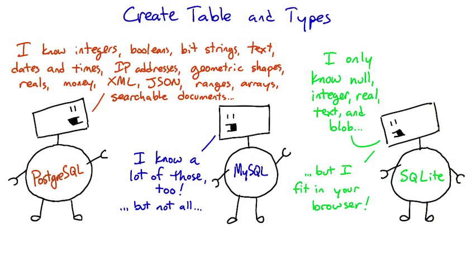For instance, PostgreSQL has a specific type for IP addresses, but MySQL does not. MySQL programmers usually use an integer or a text string to store IP addresses.